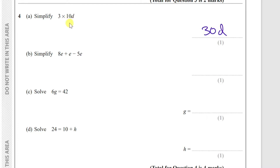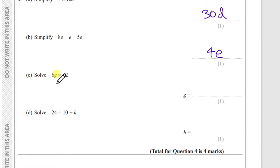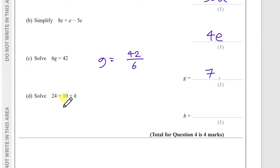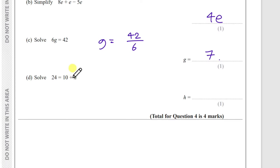Question 4 — algebra. Simplify 3 × 10d: 3 times 10 is 30, so the answer is 30d. Simplify 8e + c − 5e: treat the lone c as 1e, so 8 + 1 − 5 = 4, giving 4e. Solve 6g = 42: divide both sides by 6, so g = 7. Solve 24 = 10 + h: h = 24 − 10 = 14.